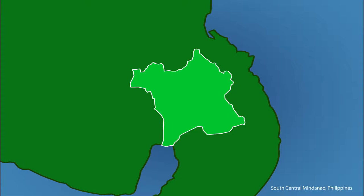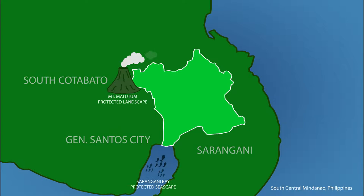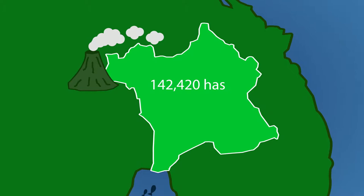The Malungan-Buayan River Basin is located in the northern portion of Sarangani Province, including some of its boundaries in South Cotabato and General Santos City. It is between two protected areas: the Mount Matutong Protected Landscape and Sarangani Bay Protected Seascape.